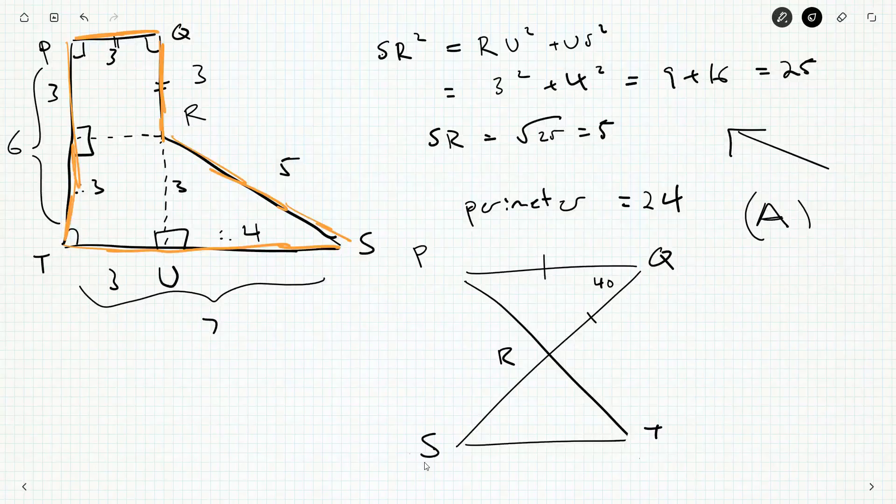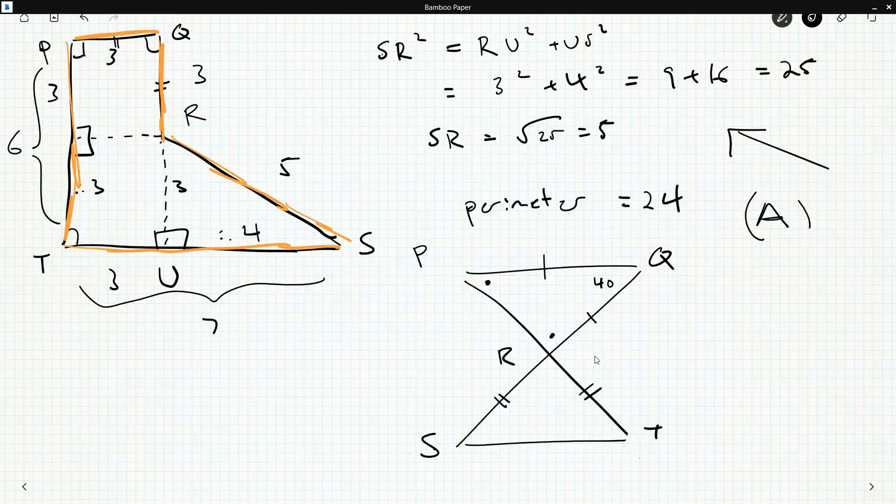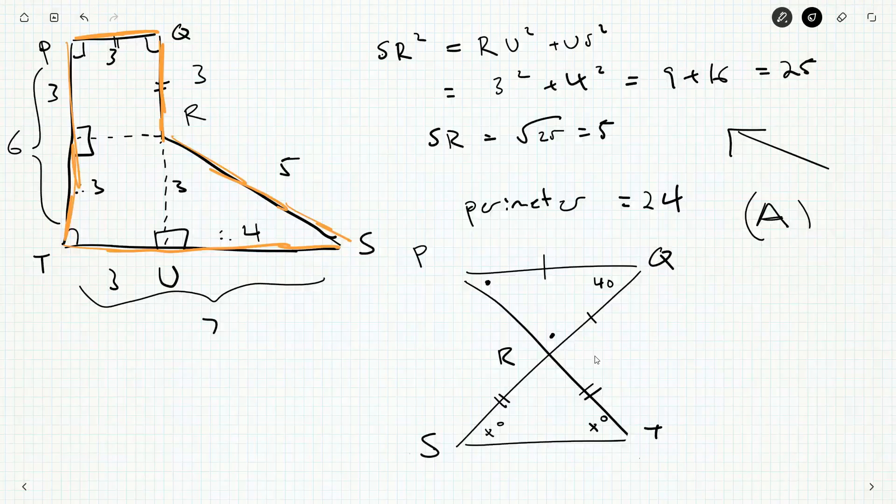Now we know these two sides are the same. That makes it an isosceles triangle, which means these two angles here are the same. We'll just be told that these two sides are the same. So that means we've got x degrees here and x degrees here. If only we knew this angle right here.